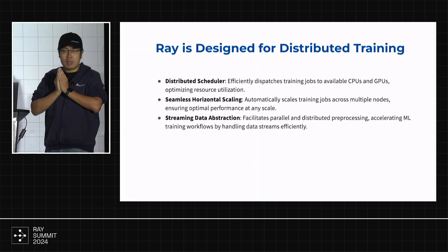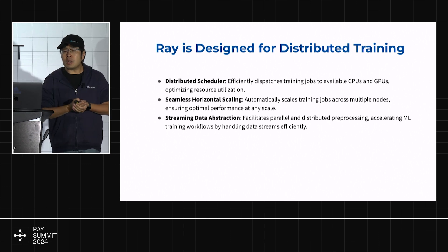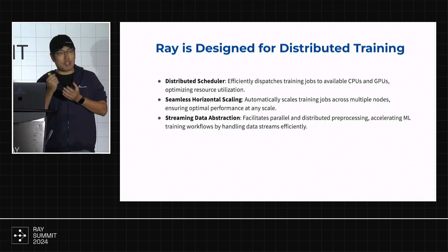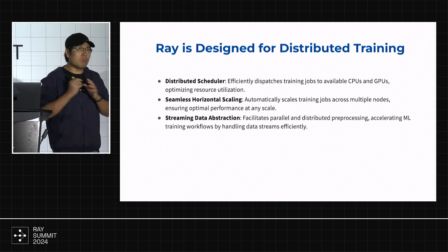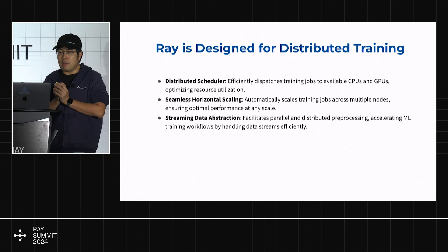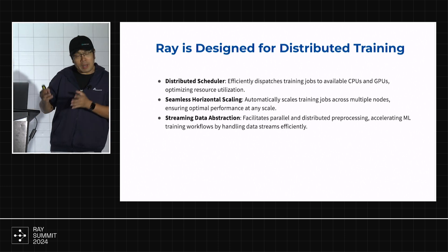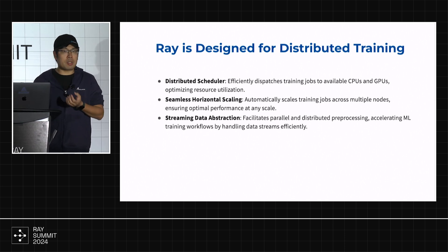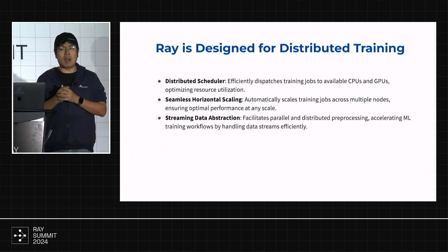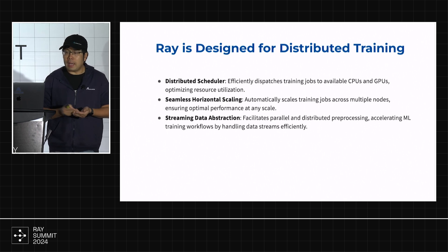So first of all, Ray — that's the reason we are here for the summit. It's designed for distributed training, has a distributed scheduler, so it can efficiently dispatch training jobs to available CPUs and GPUs, optimizing resource utilization. Also, Ray provides many ways to scale horizontally. For example, you can write a Python project running at a small scale, even a single machine, and then use Ray to easily scale your jobs to hundreds of thousands of different nodes, while ensuring optimal performance at that scale. Ray also has streaming data abstraction to facilitate parallel and distributed data pre-processing, accelerating the workflow by handling data streams efficiently.